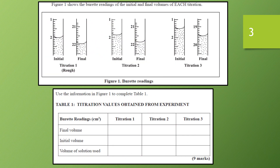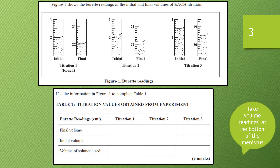We're also given the burette readings — initial and final volumes for each titration. Our task is to read the volume on the burette. A caution: when reading burette readings, we have to identify the meniscus because we take volume readings at the bottom of the meniscus. That curve — the line — we take our readings at the bottom of the meniscus. So for titration one: